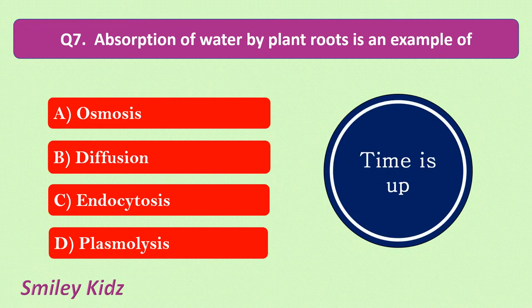Your time is up and the correct answer is osmosis. Absorption of water by the plant roots is an example of osmosis.